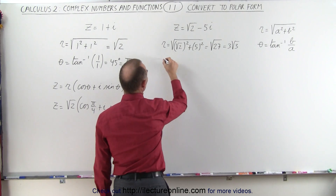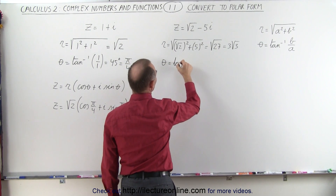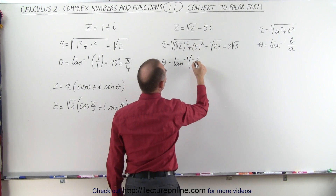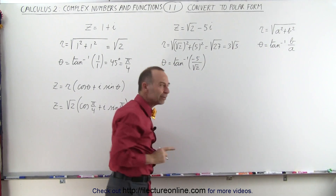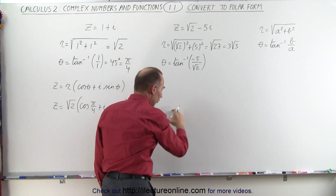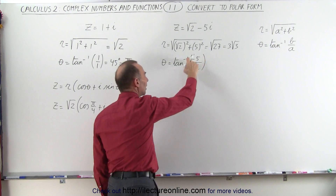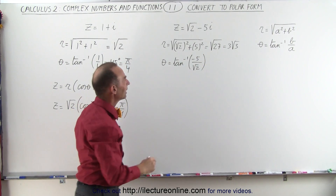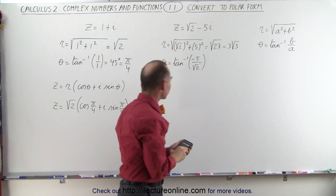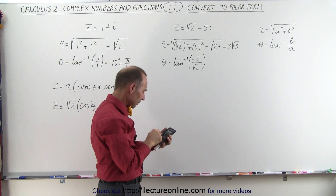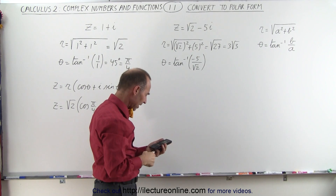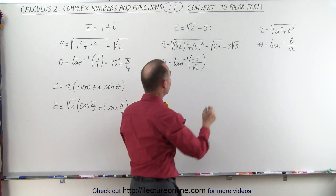To find the angle, theta is equal to the arctangent of b over a. b is negative 5 and a is the square root of 2. It does matter that we use a negative in there because we could have the angle being below or above the real axis, so we want to make sure we put in the proper sign. Here we don't care about the sign since we're squaring it anyway. So we have negative 5 divided by the square root of 2 and take the inverse tangent of that, giving us minus 74.2 degrees.